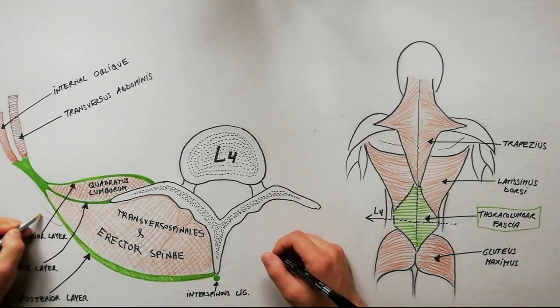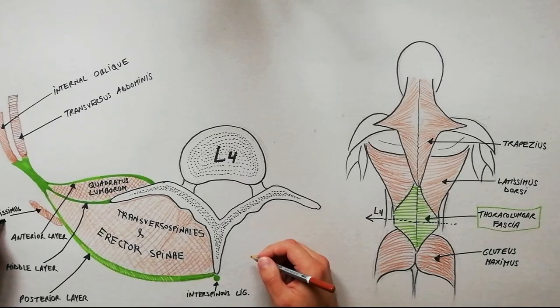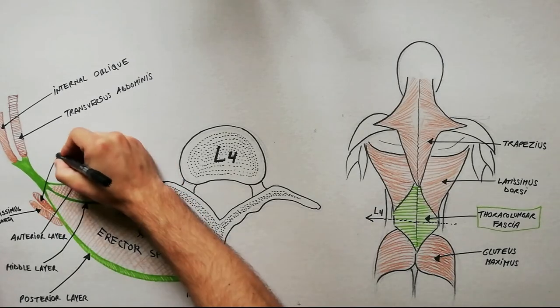Arising from the posterior layer we can also draw the latissimus dorsi and serratus posterior inferior.